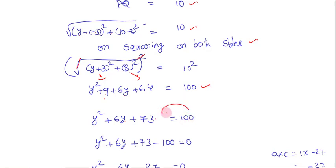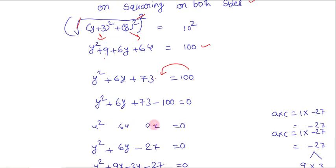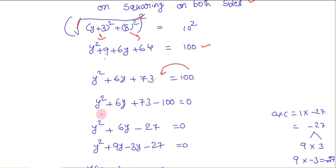Transporting 100 to the left-hand side, it becomes negative: y² + 6y + 73 - 100 = 0. From this we get the quadratic equation y² + 6y - 27 = 0.